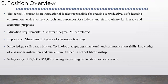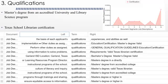The knowledge, skills, and abilities that can be summarized for a school librarian are that they should be adept with technology, they should have organizational and communication skills, they should have knowledge of classroom instruction and curriculum, and they should be trained in school librarianship. The salary range is between $55,000 and $60,000 starting, depending on location and experience. The qualifications are a master's degree from an accredited university and library science program and the Texas school librarian certification.